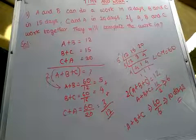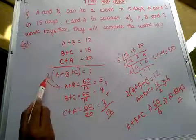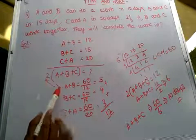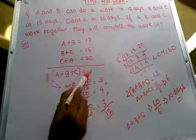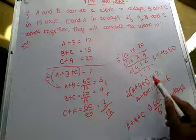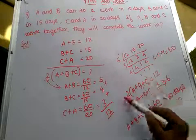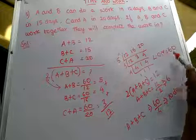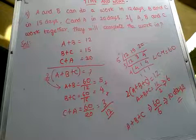Is it clear? The only difference compared to the previous problem is that we divide by 2 here, because we have 2A, 2B and 2C. We got 12 as the total, divided by 2 equals 6, then 60 divided by 6 equals 10 days. This is the answer.